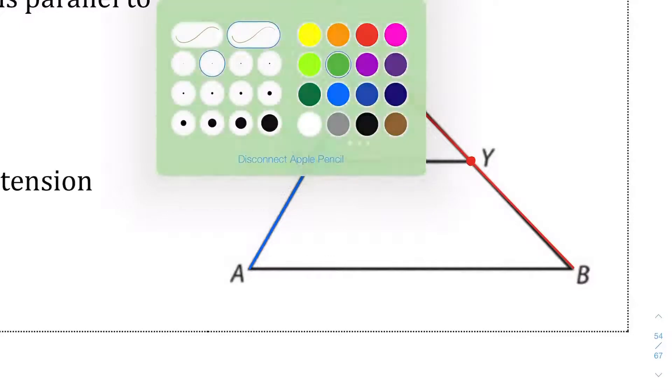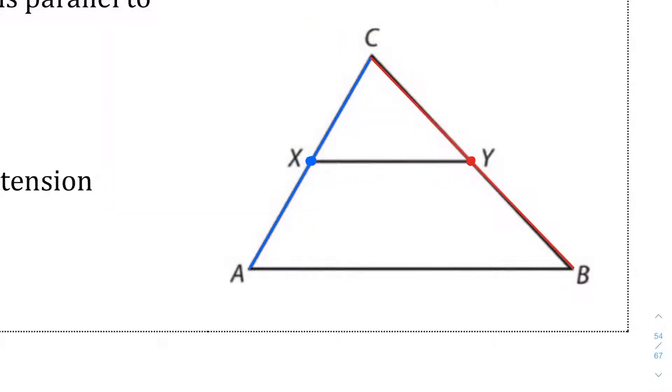Well, that segment XY from X to Y, which I'm making green right now, is going to be exactly half the length of A to B. So it works out interestingly. If this is 4, this is 2.